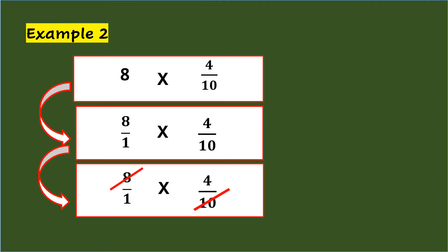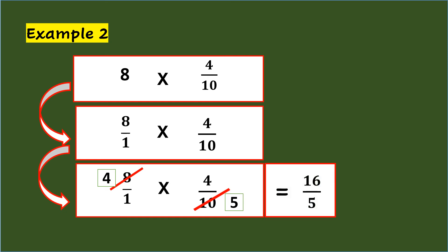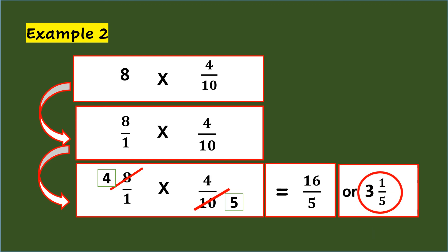Dividing the numerator 8 by the GCF 2 will give you 4. Take note that the numerator 4 of 4 tenths and the denominator 1 of 8 over 1 cannot be cancelled since their GCF is not more than 1. Finally, multiply both numerators: 4 times 4 equals 16. Multiply also both denominators: 1 times 5 equals 5. Therefore, 4 over 1 times 4 fifths equals 16 fifths, or simplified, 3 and 1 fifth.